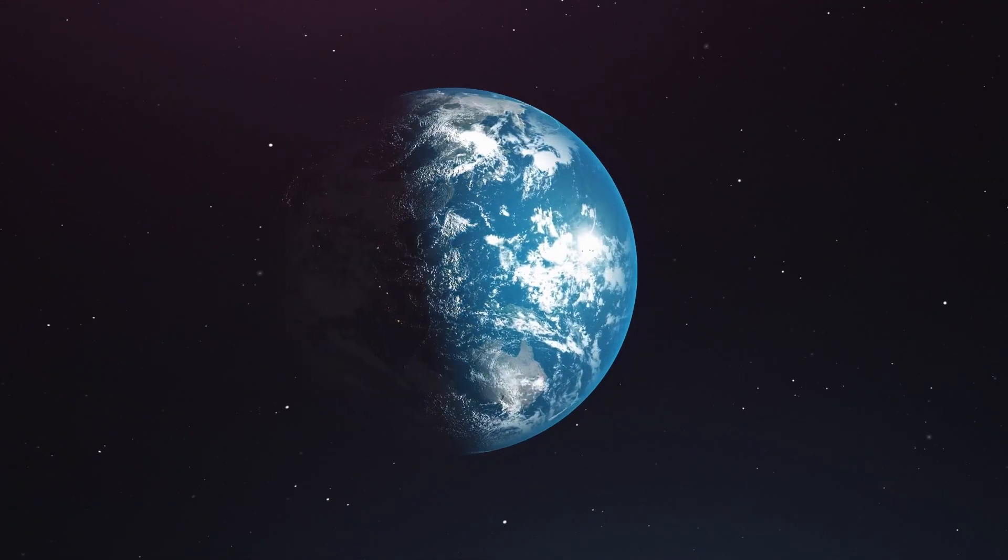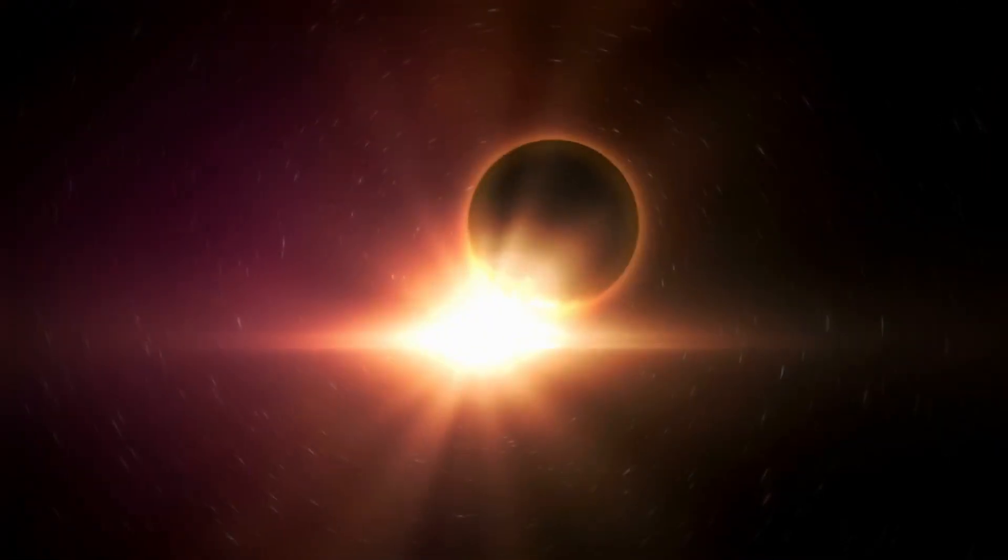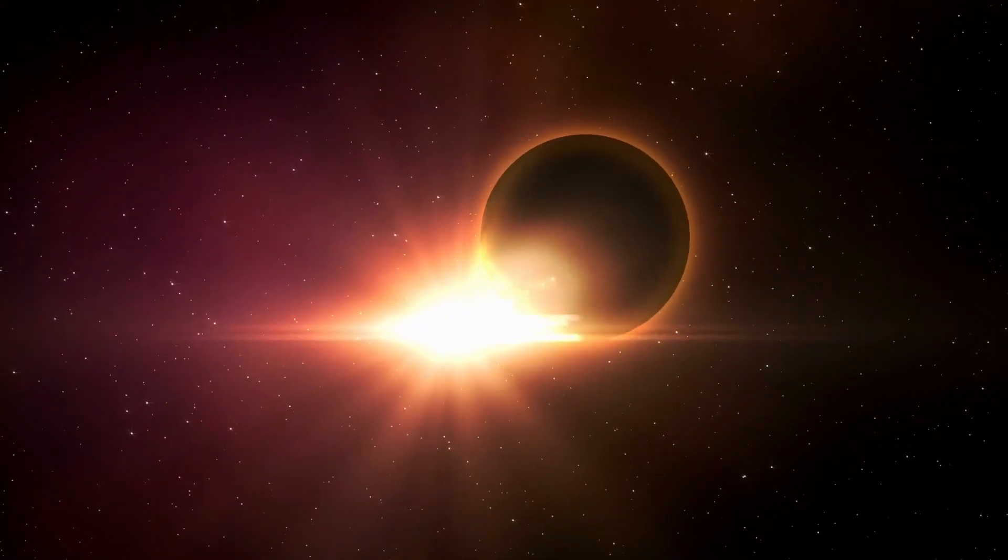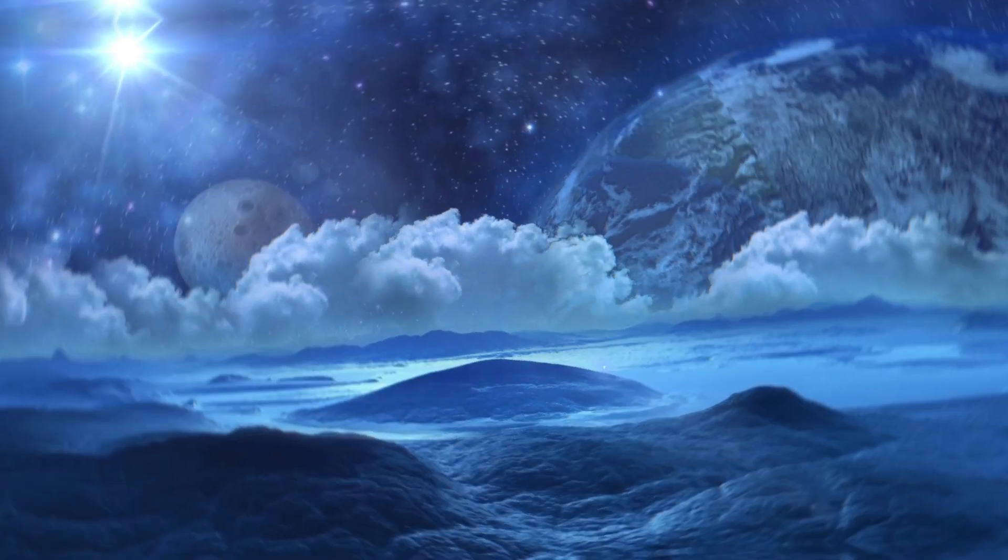Relatively small terrestrial planets like our Earth are difficult to detect. Only a few are known to receive the appropriate amount of radiation from their star to allow liquid water to exist on their surface.